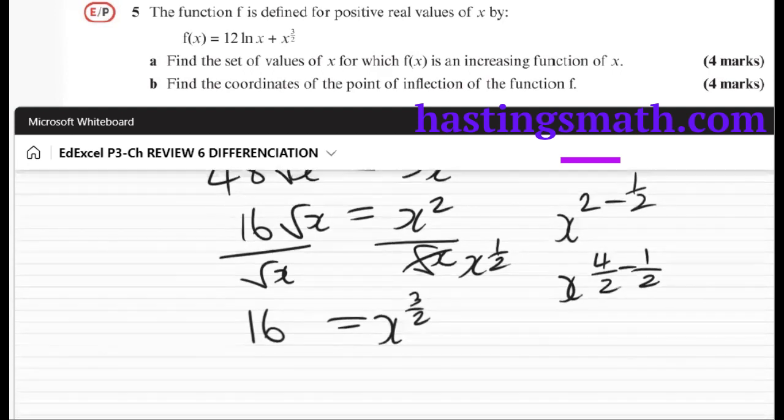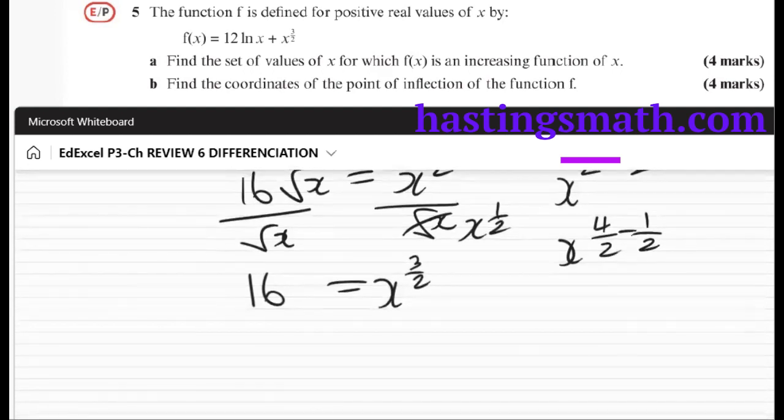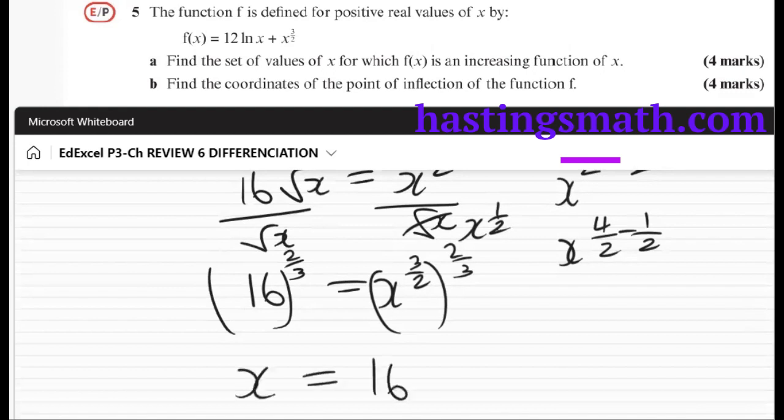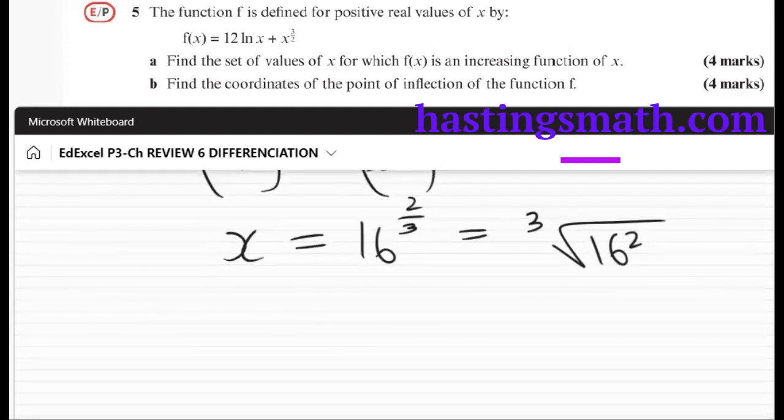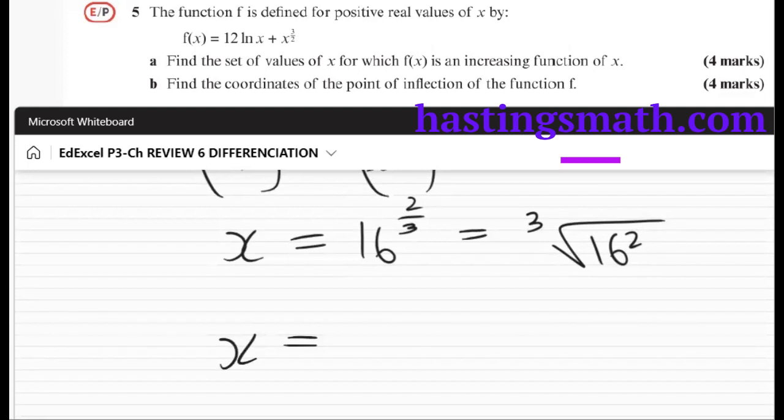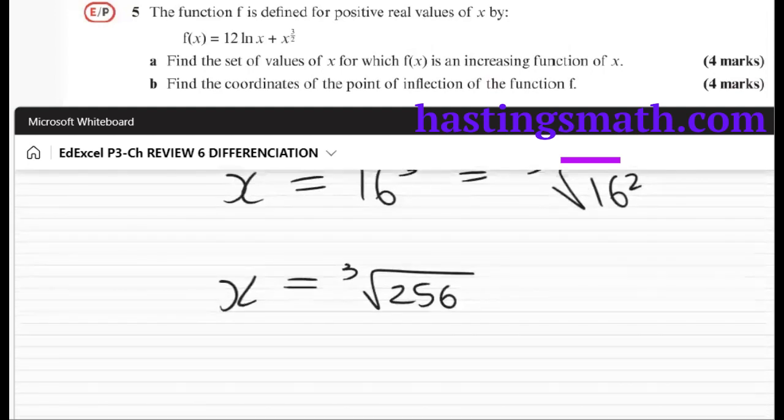x to the 3/2 is equal to 16. And the way to get rid of that 3/2, well one way to do it is to raise both sides to 2/3. That would make this a one, 3 times 2, 6/6, which is just one. So x is equal to 16 to the power of 2/3. Another way to write that is the cube root of 16 squared. So x is the cube root of 256. I did use the calculator for that.